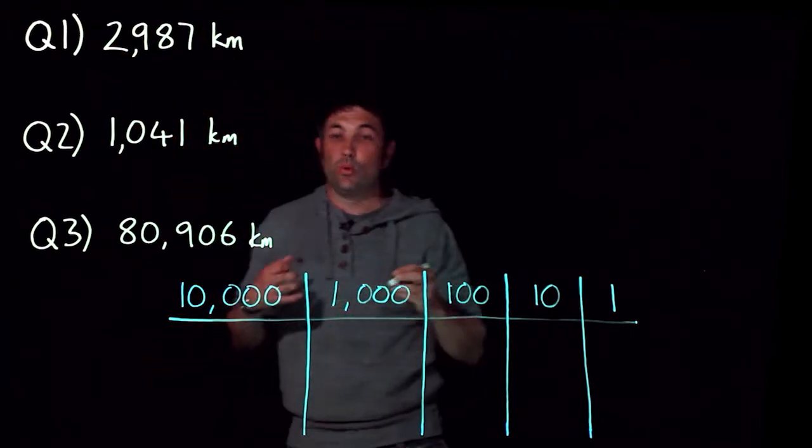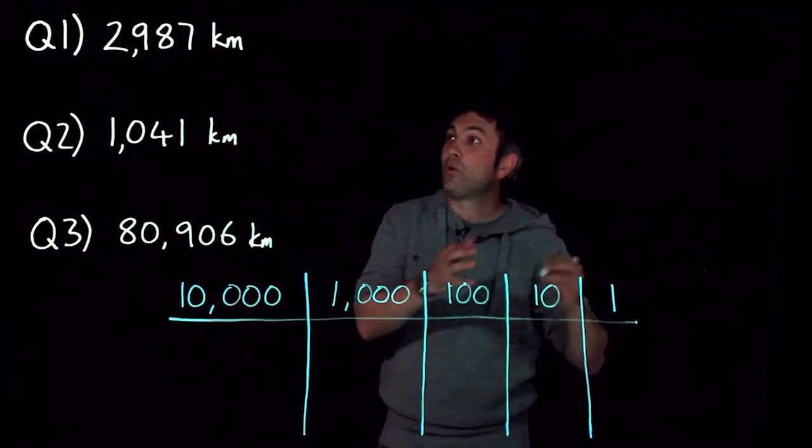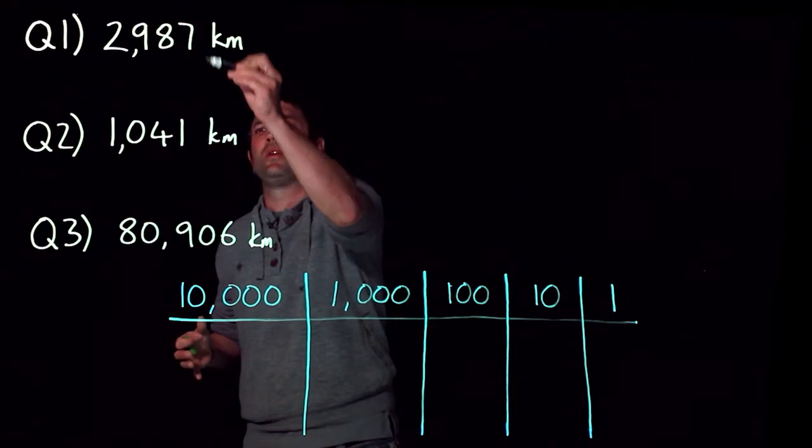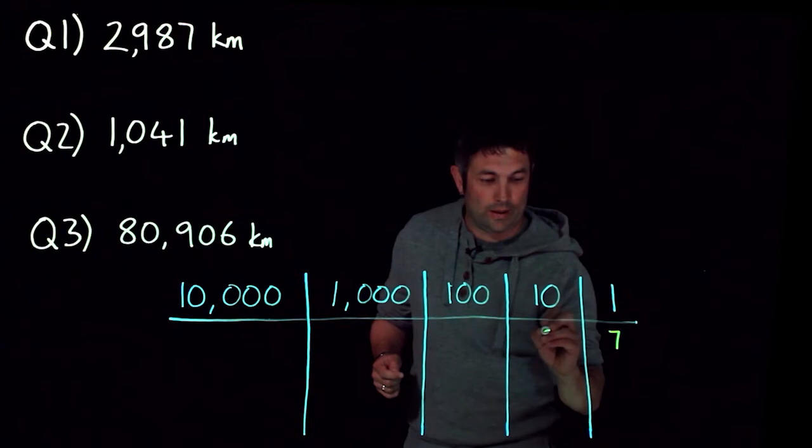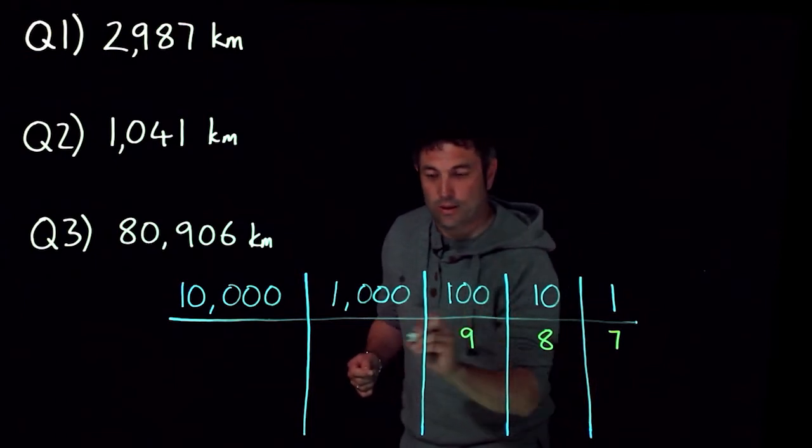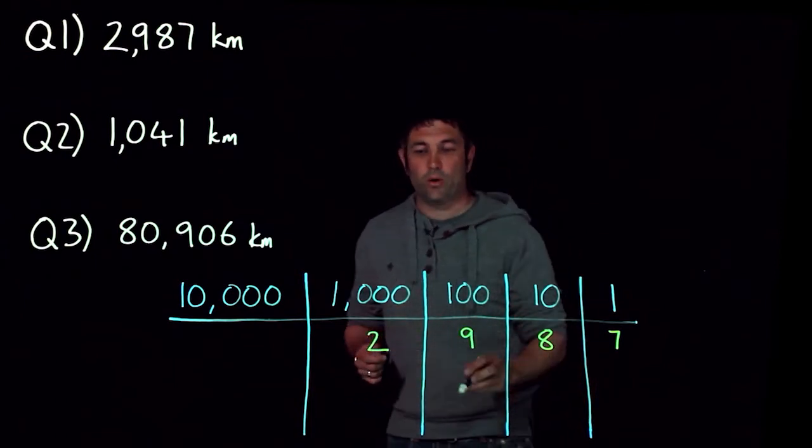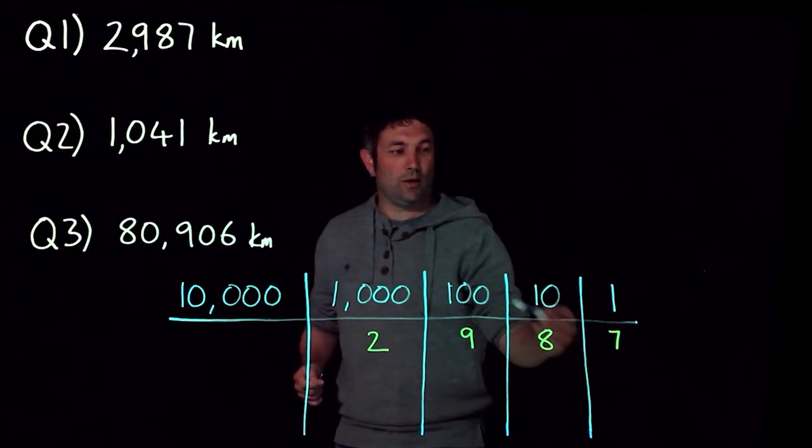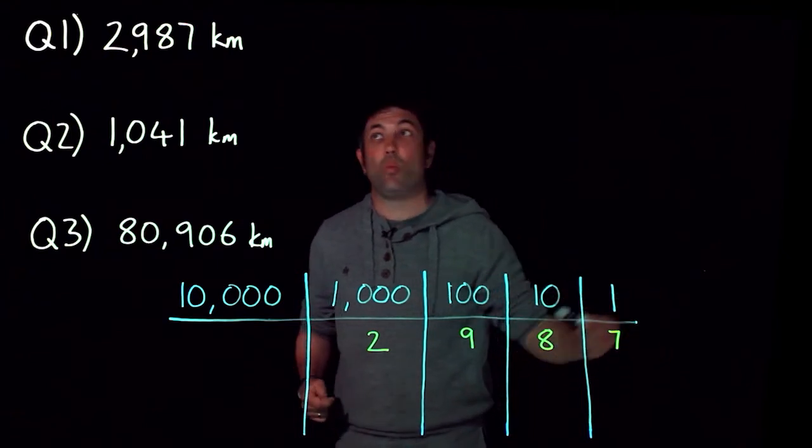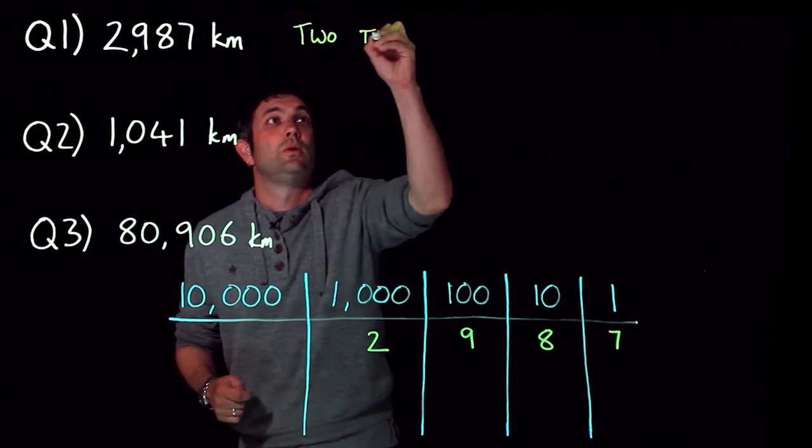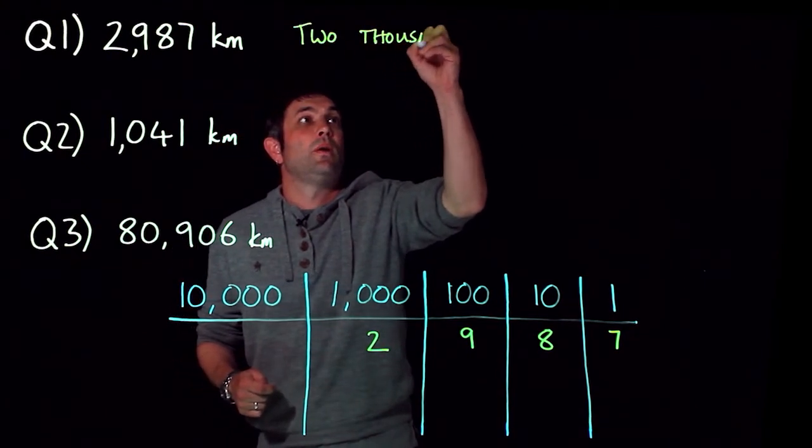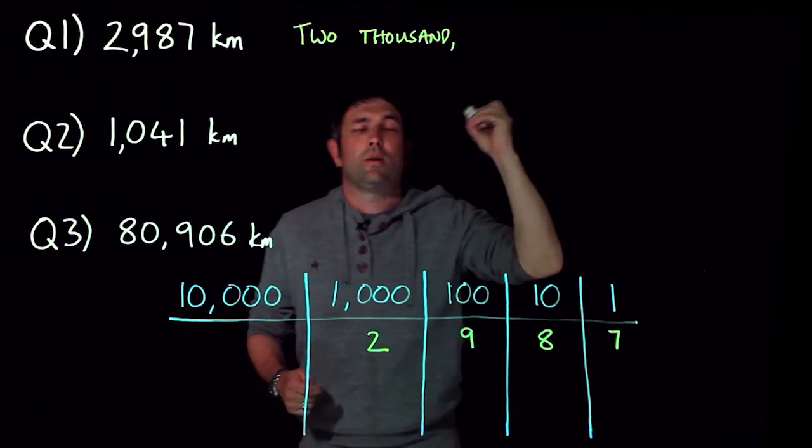I'm going to start from right to left, because numbers work from right to left. The place value is from the decimal point, and with a whole number the decimal point is at the end. So I've got two thousands, nine hundreds, eight tens, and seven ones.